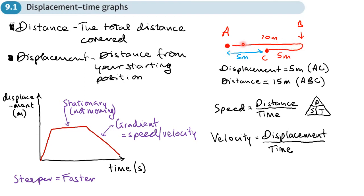Going back to my walking example: if I wanted the speed for the whole journey, I'd take the distance of 15 meters and divide by the time taken. If I wanted the velocity, I'd use the displacement of 5 meters divided by the same time. The displacement is how far I am from my starting position — not how far I've walked in total. This is an important concept when finding velocity.